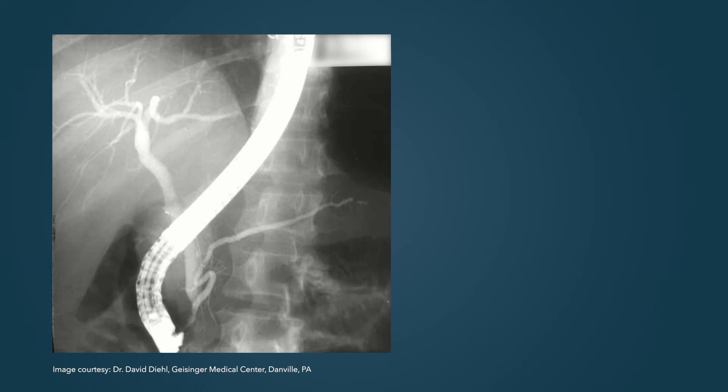Some of the important landmarks that we see at the time of ERCP are the direction of the duct in relationship to the spine. For example, a duct or a guide wire that crosses the spine is typically the pancreatic duct, whereas the bile duct is expected to go vertically towards the liver.